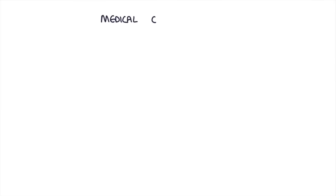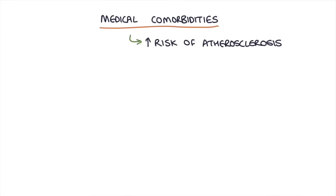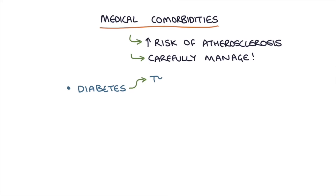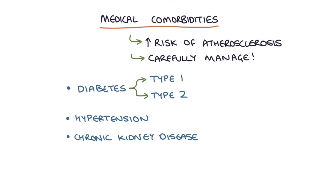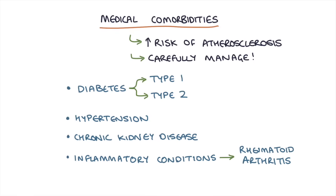There are certain medical comorbidities that really increase the risk of atherosclerosis and should be carefully managed to minimize that risk. These include diabetes (type 1 and type 2), hypertension, chronic kidney disease, inflammatory conditions such as rheumatoid arthritis — because remember, atherosclerosis is an inflammatory process — and atypical antipsychotics used in conditions like schizophrenia.